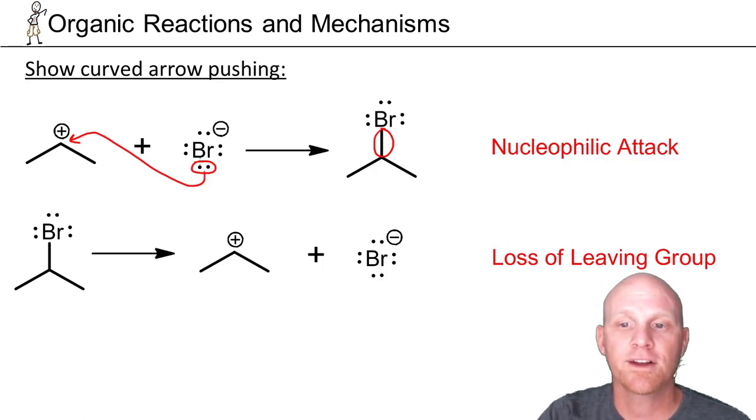The arrow starts from electrons and terminates here at the carbon atom. Now, some people like to draw it towards the plus charge itself, but that's just a keeper here to let us know that carbon's not going to fill the octet. In this case, we want to draw the arrow all the way towards the carbon atom itself.